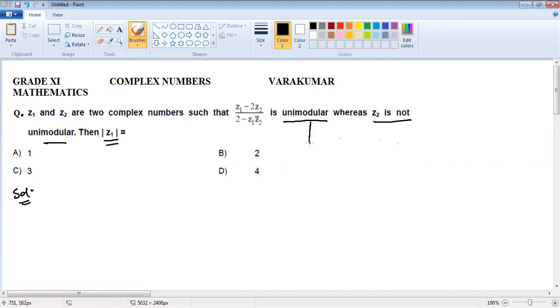First of all, we need to know what is unimodular. For a complex number Z, the magnitude of Z equals 1. If modulus Z equals 1, squaring both sides gives modulus Z squared equals 1. Then we can write it as Z into Z bar equals 1. So this concept I am going to apply.